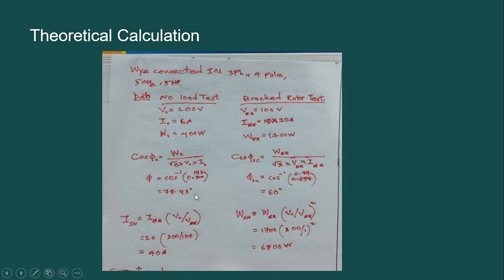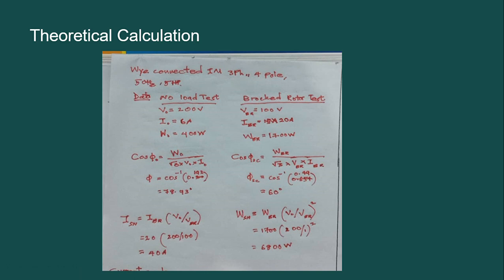Phi naught represents the angle between voltage and no-load current. Phi SC gives the angle between voltage and short circuit current. Most importantly, we need to convert the current and power into their corresponding rated values of the motor.